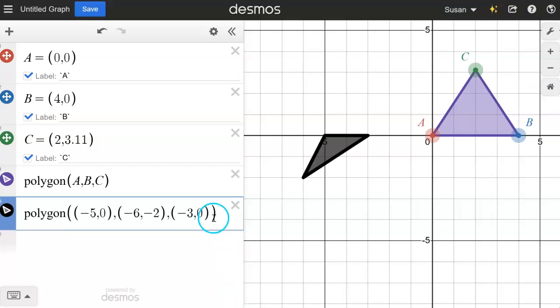The cool thing about it, though, is if I really wanted to add a vertex and create instead of a triangle, maybe I want a quadrilateral, I could type comma, and let's do negative four, one. Just going to make something up here. And there now I have a quadrilateral.